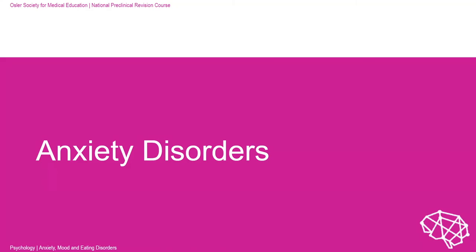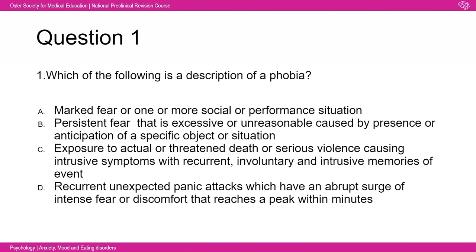We're going to start with anxiety disorders and our first Socrative question: which one of these is a description of a phobia? The answer is B — a persistent fear that is excessive or unreasonable, caused by the presence or anticipation of a specific object or situation. We're going to go through what the other options are on the next slide.